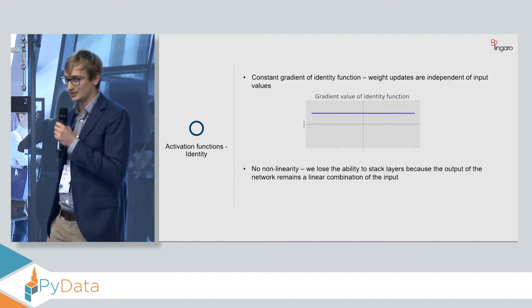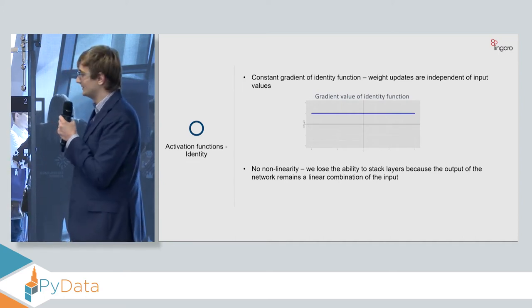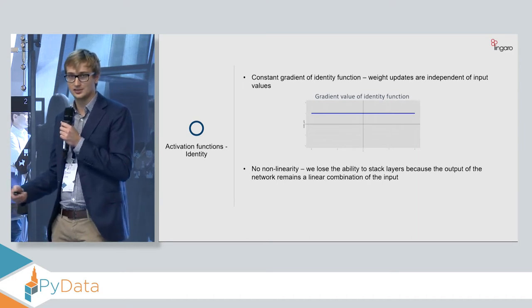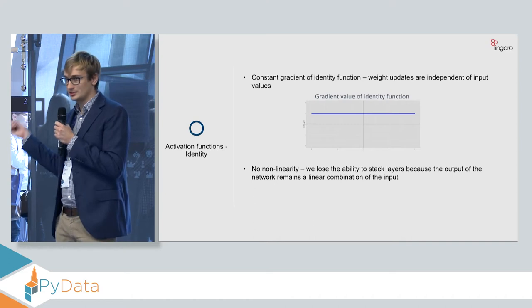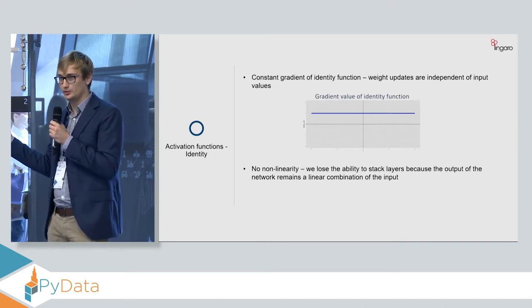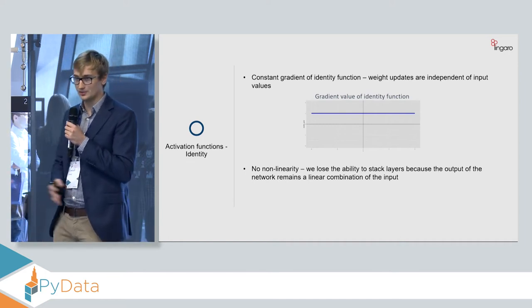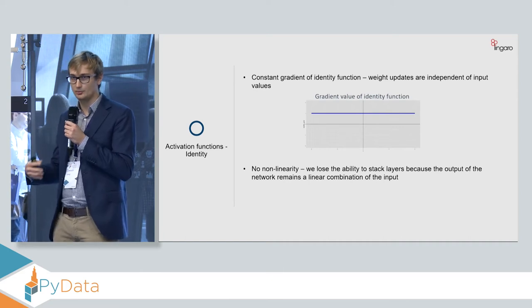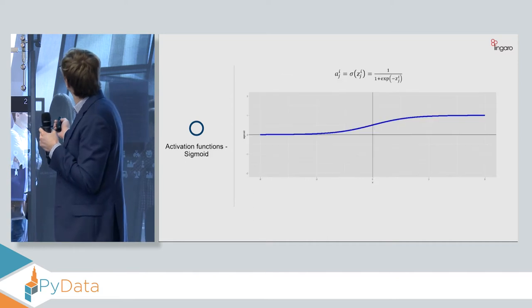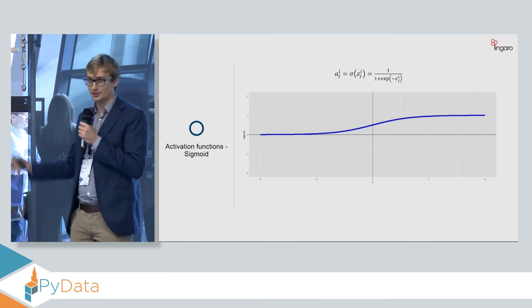It's not actually a function that I want to show differences based on this one. So some properties of this function, it has a constant value of gradient. But the main disadvantage here is that we lose the ability to stack layers, because when using this identity function, we do not introduce non-linearity into the model. So basically, no matter how many layers we stack, there's still going to be a linear transformation.